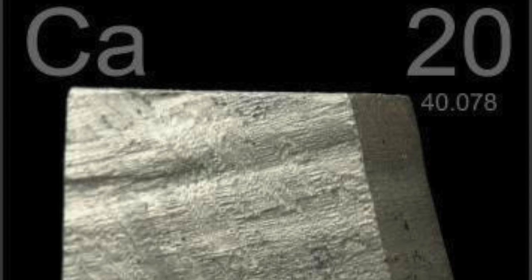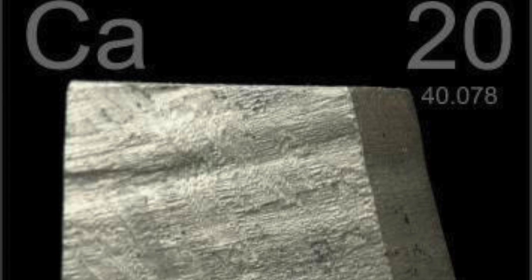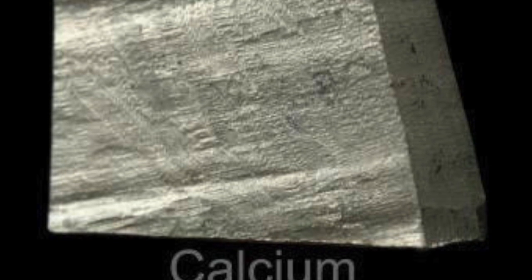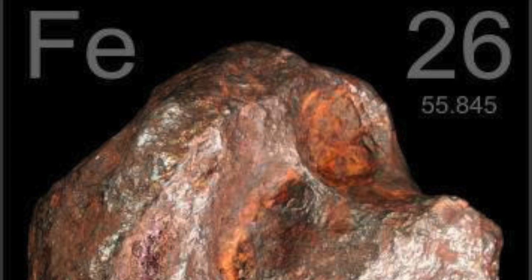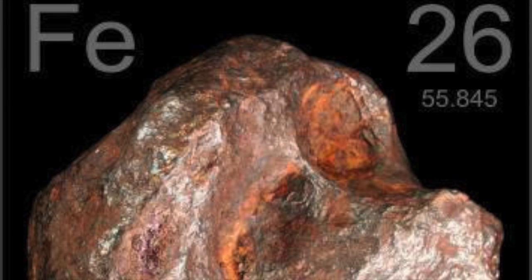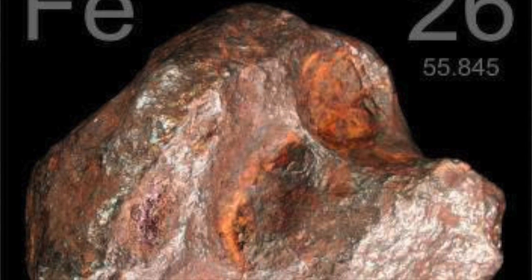The next group of elements are called the alkaline earth metals. They are in the second column of the Periodic Table. Like the alkali metals to the left, these metals are very soft, but do not react as violently with water.